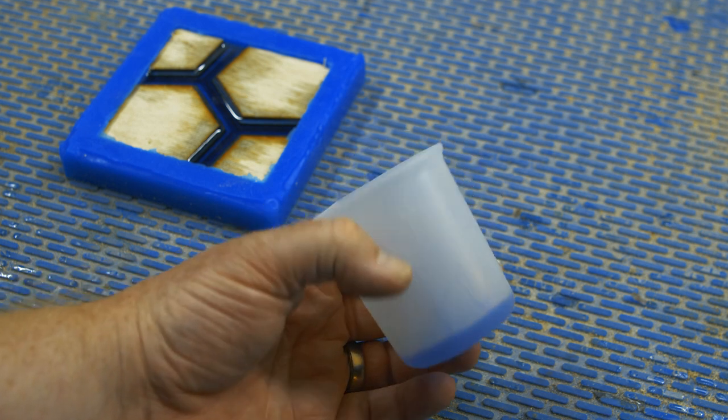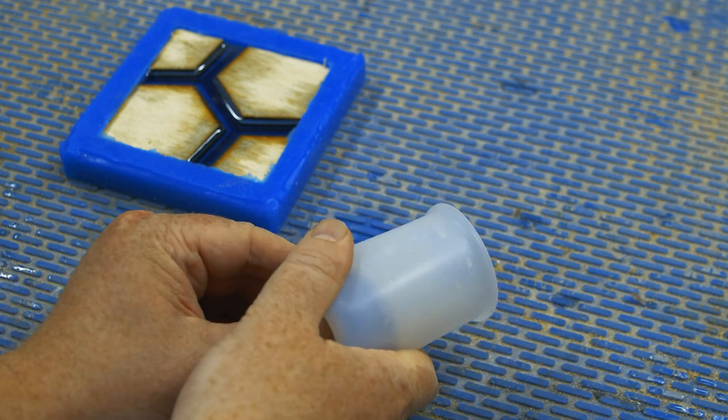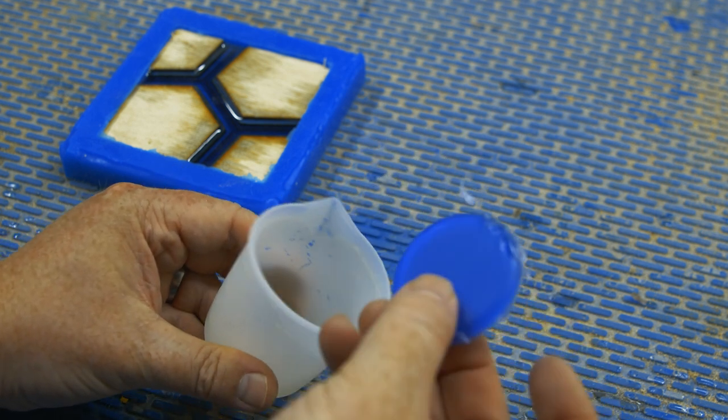When you're ready to come back to it, just press on the bottom of the cup and the puck of hardened resin just pops right out.